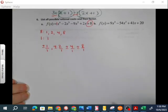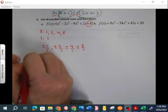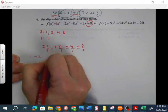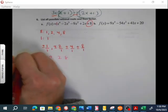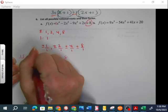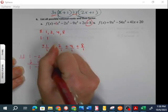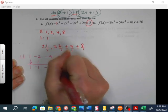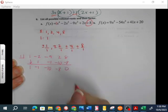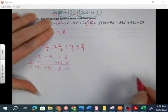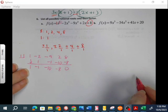And then we're going to synthetically divide and see if we can find our zeros. So, 1, negative 2, negative 9, 2, and 8. I usually start with 1, and then if that doesn't work, I'll go to negative 1. And it does, that's so nice.